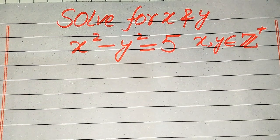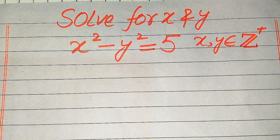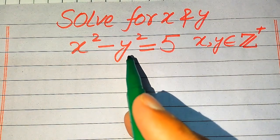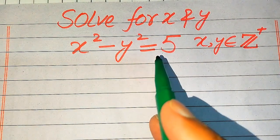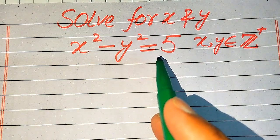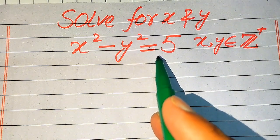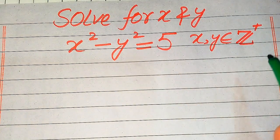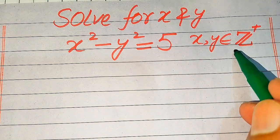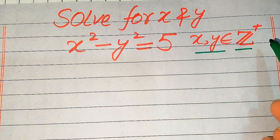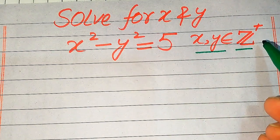Hello everyone. How to solve this problem for the values of x and y if we have x squared minus y squared equals 5. Here you see that x and y must be positive integers, meaning we solve this problem for only positive integer values of x and y.